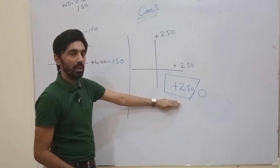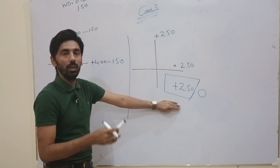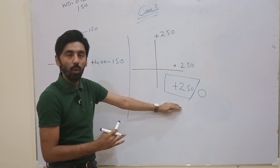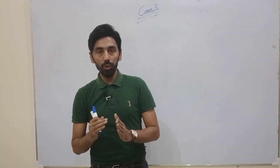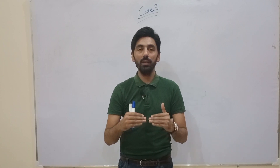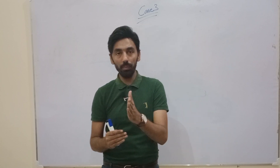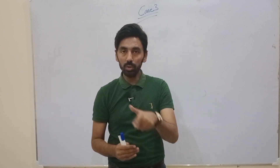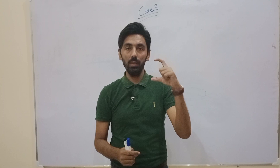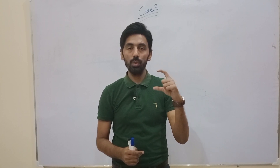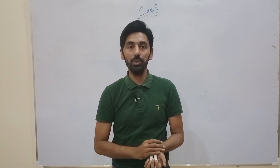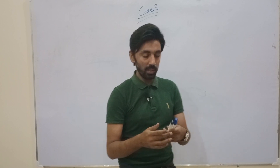Our prescription is in purely spherical form. Your concluded prescription can be in just spherical form, just cylindrical form, or both — a sphero-cylindrical or toric prescription. The conclusion of Case 3: if both meridians, 90 and 180, are neutralized at the same neutral point, we get a net prescription in purely spherical form.